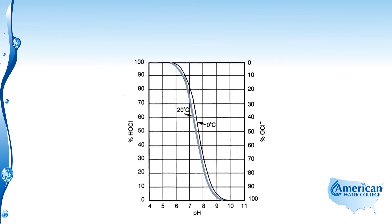We're going to look at the 20 degrees Celsius temperature line and see what happens when the pH of the water is 8. A pH of 8 is typical for water systems. At a pH of 8, we see that 20 percent of the chlorine is in the form of hypochlorous acid.